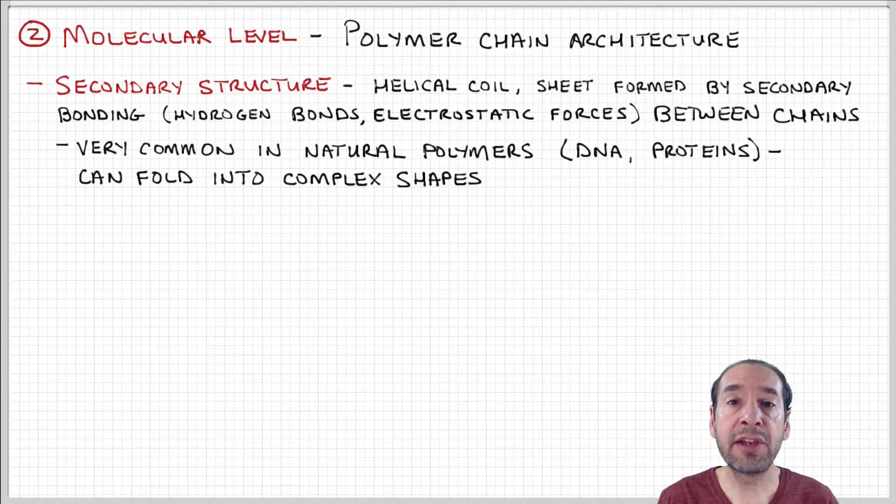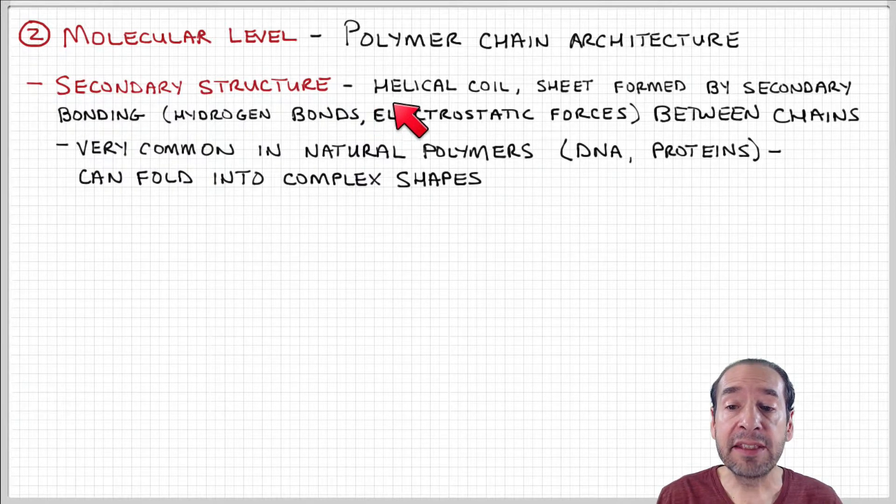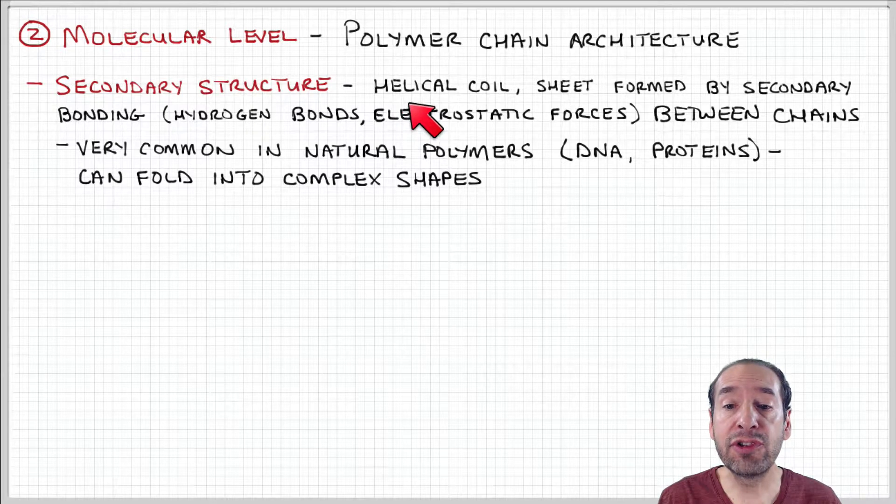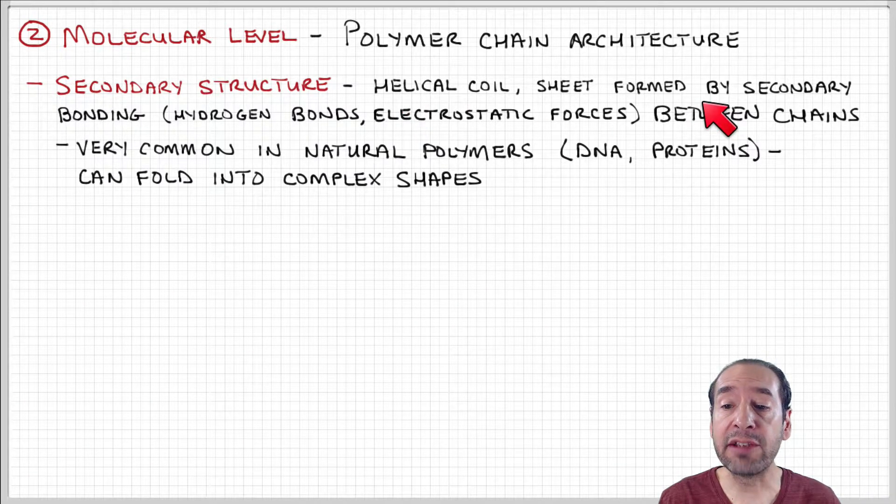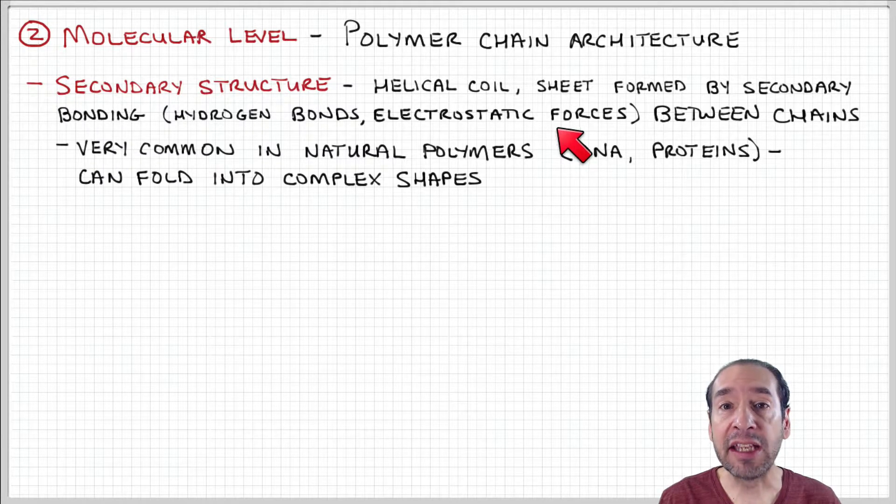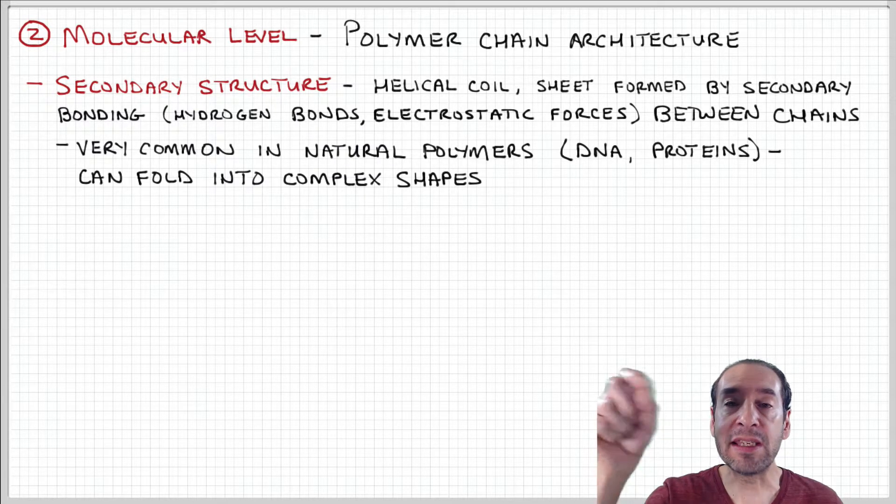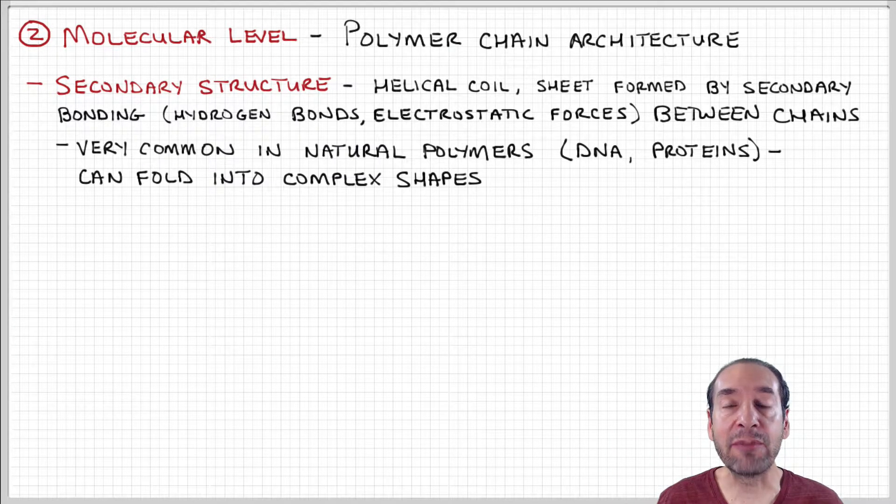Another level of structure at the molecular scale is secondary structures. We talked about this in the context of biological polymers like DNA and proteins. This dimension to the structure refers to secondary interactions like hydrogen bonding, electrostatic forces, and Van der Waals interactions. These occur between different chains or different parts of the same chain and allow the chain to assume a more complex shape than just this floppy spaghetti strand picture of polyethylene.